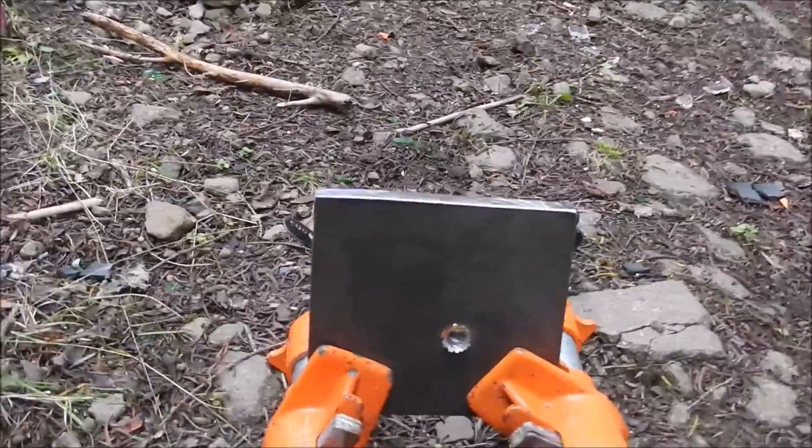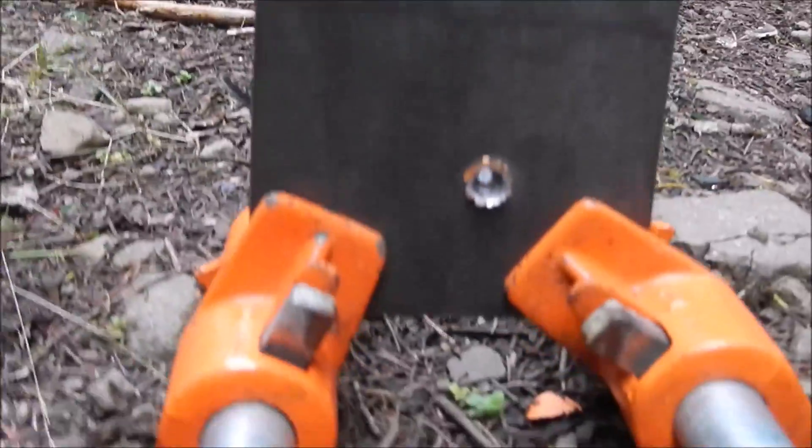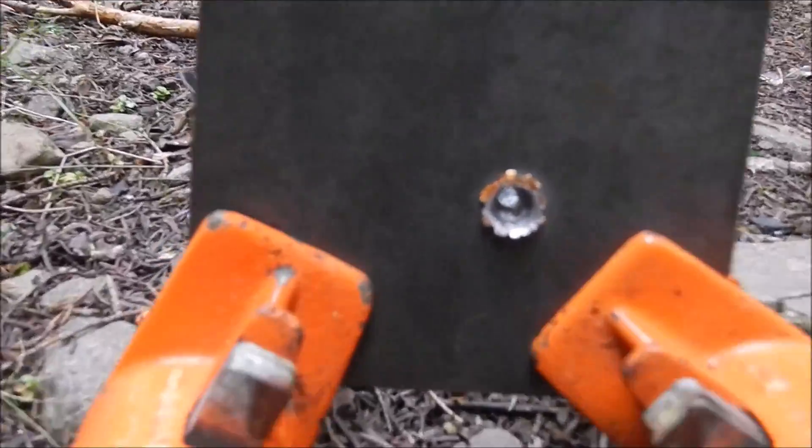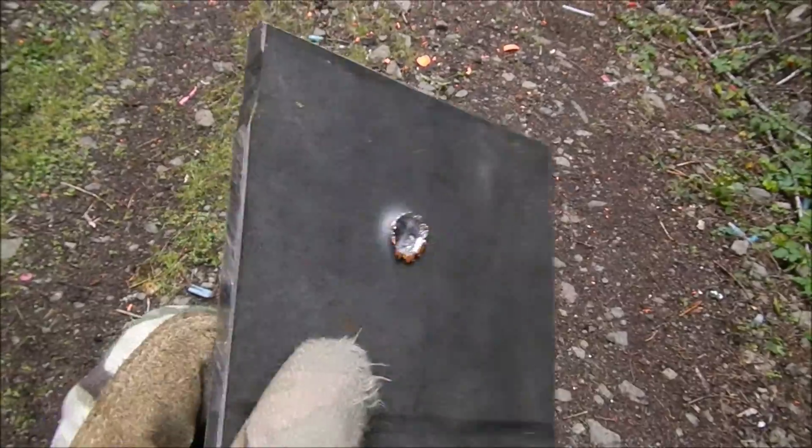Okay, here's our 3/8 inch thick control plate with the first round. And look at that, a complete through and through hole. So now that we know our control can be penetrated by the rounds we're shooting, let's try a 1/2 inch plate and see if we can go through that as well.